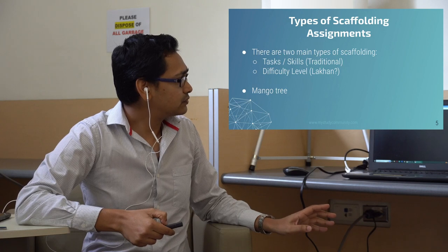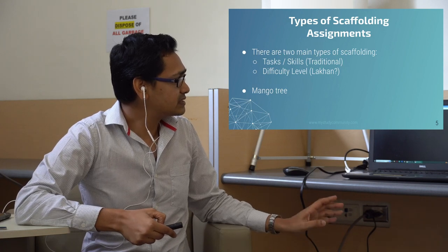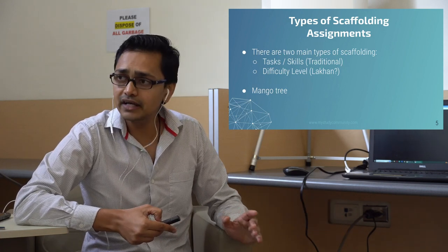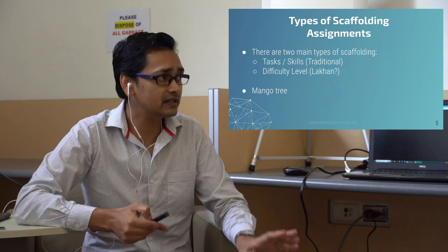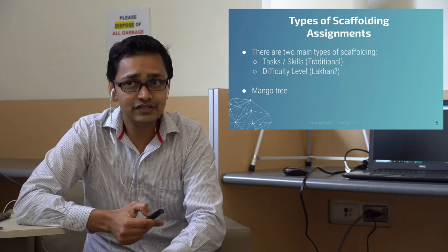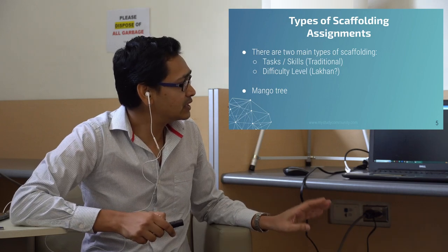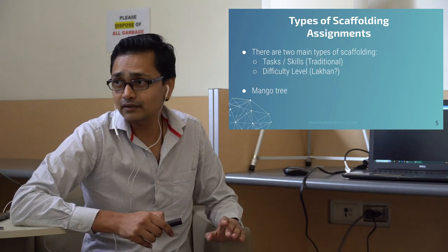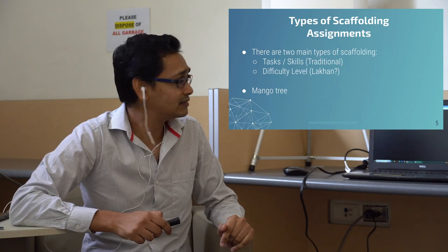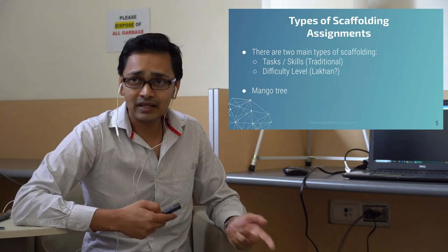So two types of scaffolding, the traditional one, which is skill. And in my research, I didn't find anybody scaffolding on difficulty. I didn't do an extensive research, so I still have to do an extensive research. So I just put my name with a question mark. Hopefully, if nobody does it, then I could hopefully get a paper from it. That's my mango tree example that I now explain.